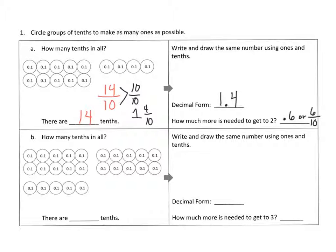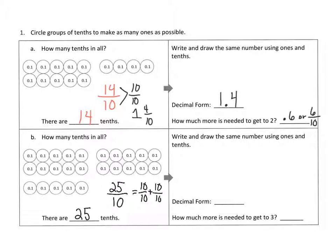Let's look at part B — how many tenths in all? Let's count: one through twenty-five. So we've got twenty-five-tenths, which looks like twenty-five over ten — an improper fraction, a fraction greater than one. We're going to be pulling out some wholes. We can pull one whole — that's ten-tenths — then another one, which would be twenty-tenths. We do not have enough to make another whole. So we've got two wholes and five-tenths left over. These are our place value disks — two ones and five-tenths.